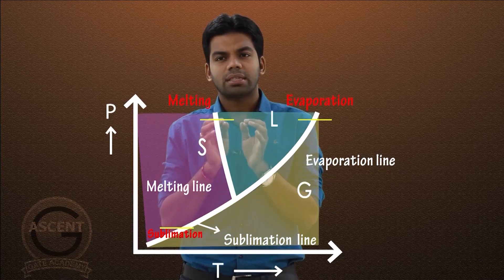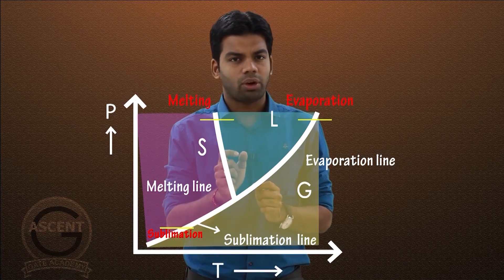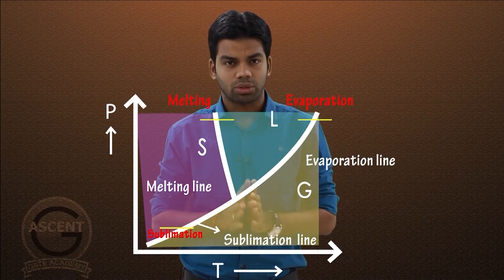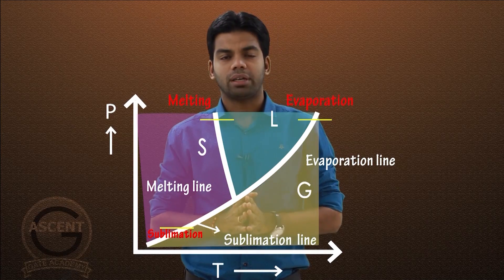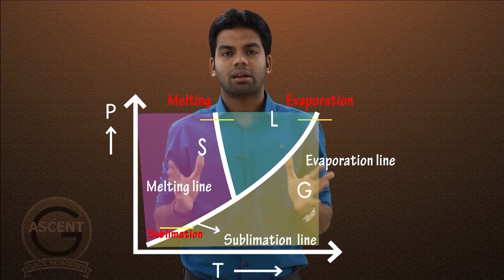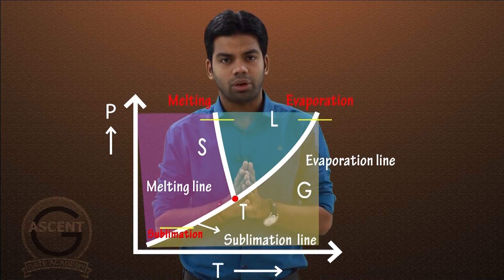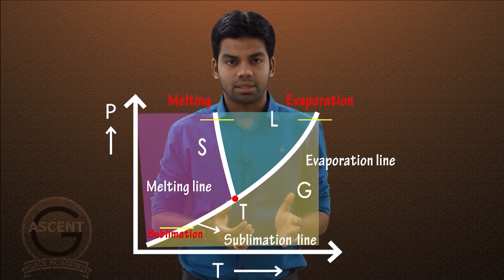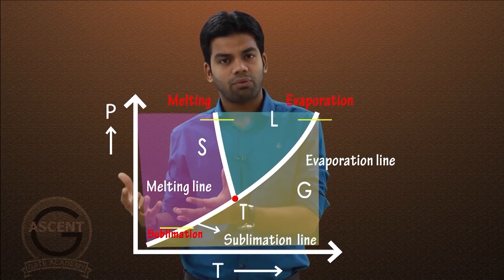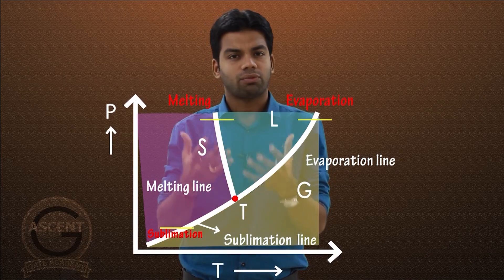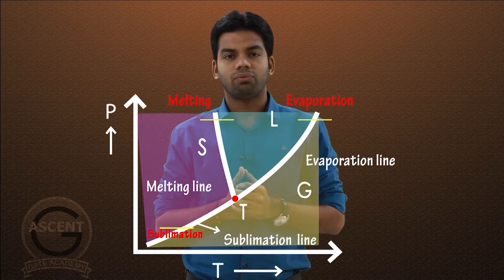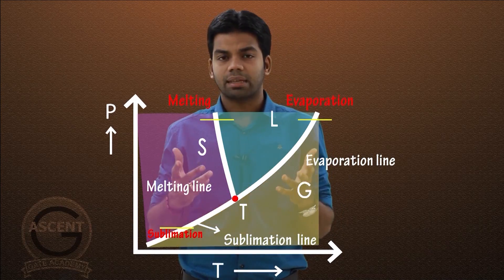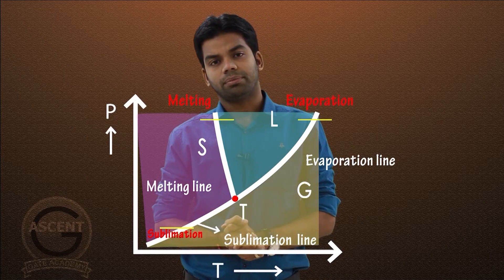You can see one common point in the diagram — the point common to all three zones — and that particular point is known as the triple point. At this point, water will exist in all three phases simultaneously: in the form of ice, in the form of liquid water, and in the form of vapor.